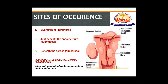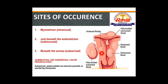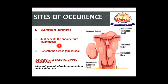Based on site of occurrence, leiomyomas are divided into three categories. First are intramural leiomyomas, which occur within the myometrium and are surrounded on all sides by normal myometrium.